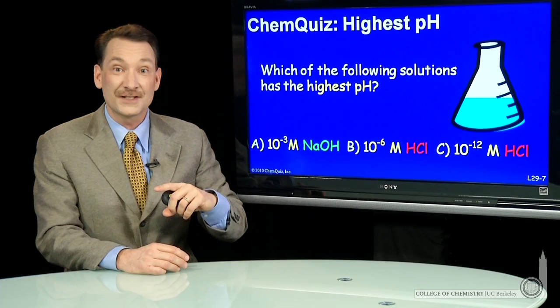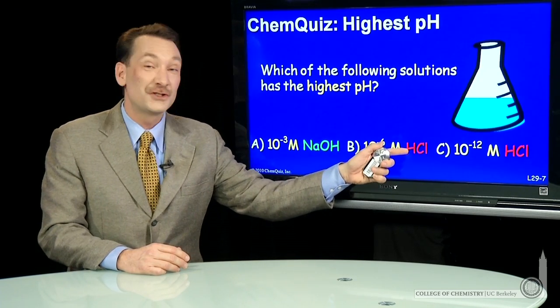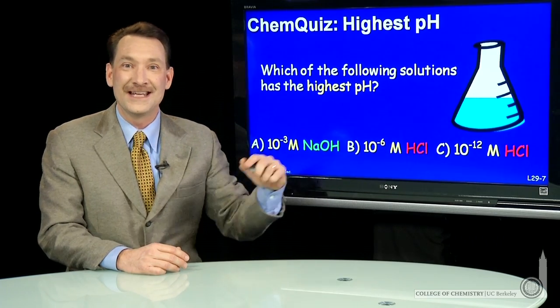10 to the minus 6 molar HCl, a strong acid, breaks up totally into the H3O plus and Cl minus.